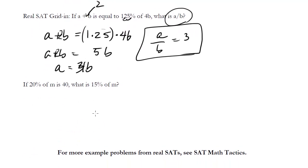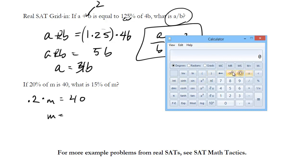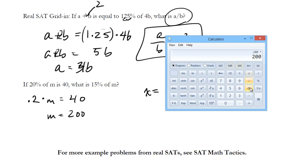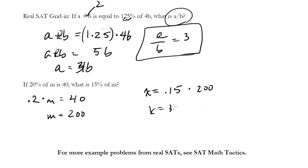Let's do one more example. If 20 percent of m is 40, what is 15 percent of m? Let's translate. So .2 of m times m is 40. What is 15 percent of m? Well m in this case would be 40 divided by .2, which is 200. And now we want to know what is 15 percent of m? Well that's 200, so we'll plug that in. So now we just do this times .15, and we get 30. And that would be our answer.